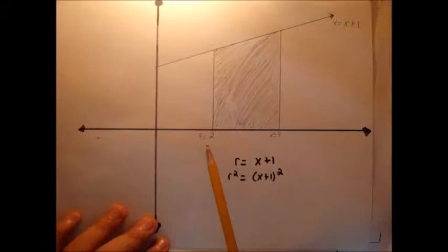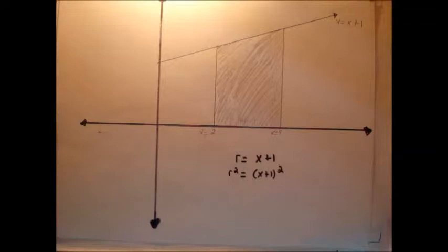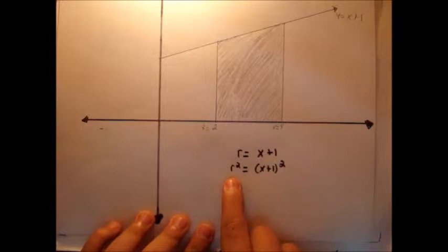From the same intervals, x equals 2 to x equals 5, we want to find the representative area and rotate it around. Well, now you see that the representative area does touch the x-axis, and this is a typical disk method. So let's actually go and find the volume. We know that the height from here to here is always going to be dependent on x plus 1. We write radius equals x plus 1. We have to square it because the area of a circle is pi r squared, so r squared equals x plus 1 squared.